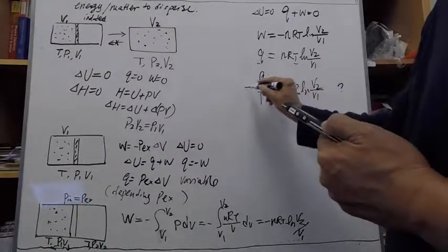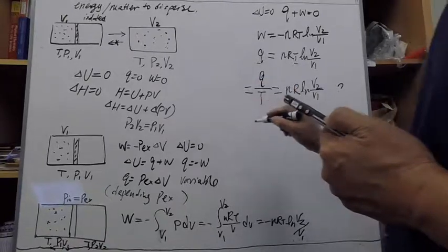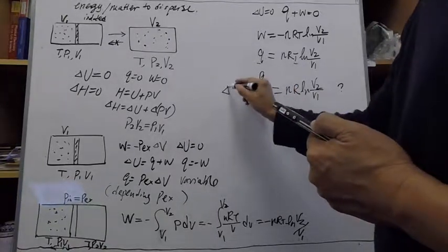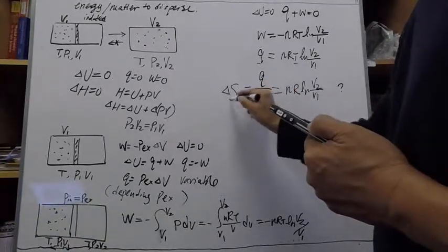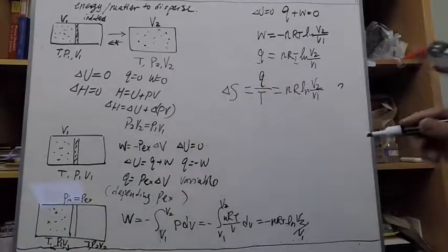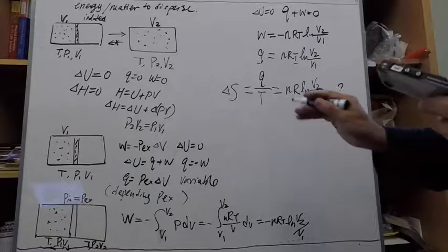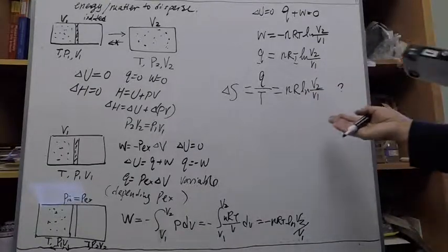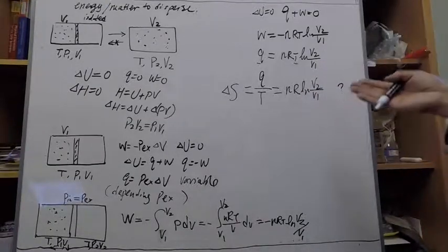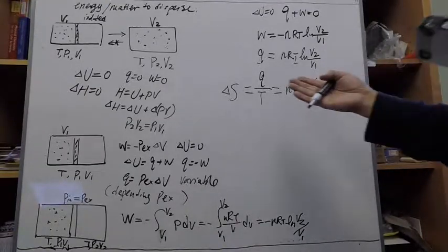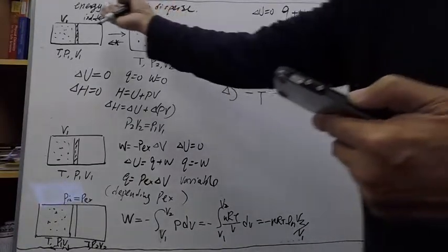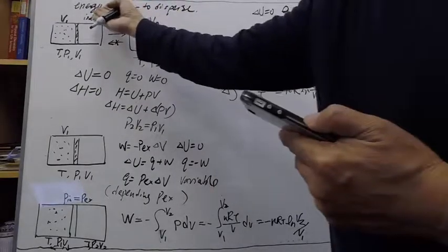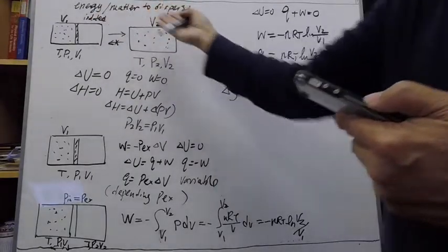We should call this some sort of state property change, and that is temporarily called entropy. This is actually one example of how we can convert this very qualitative statement into a quantity that we can actually experimentally measure or, in the ideal case, calculate.